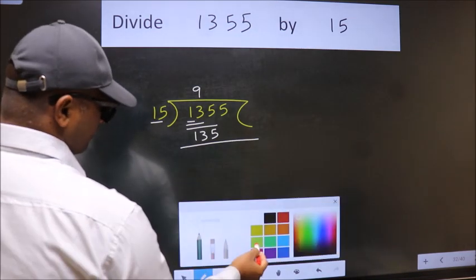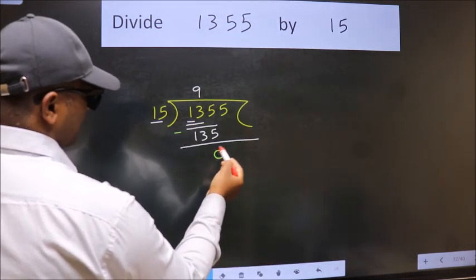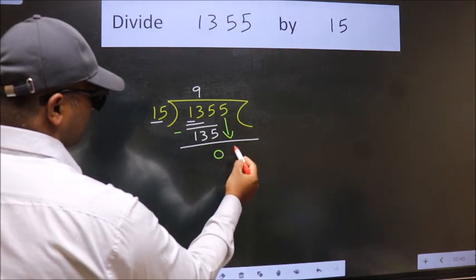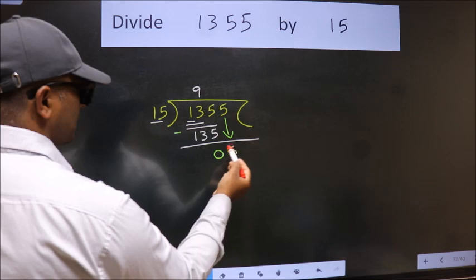Now we should subtract. We get 0. After this, bring down the beside number, so 5 down. After this step, the mistake happens.